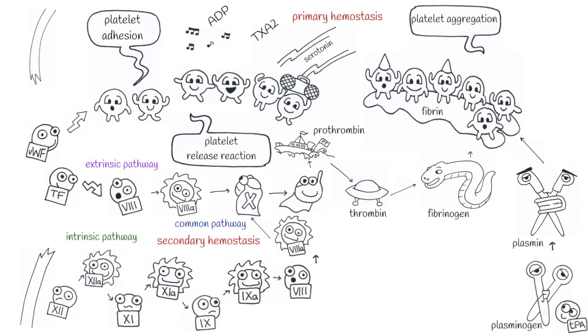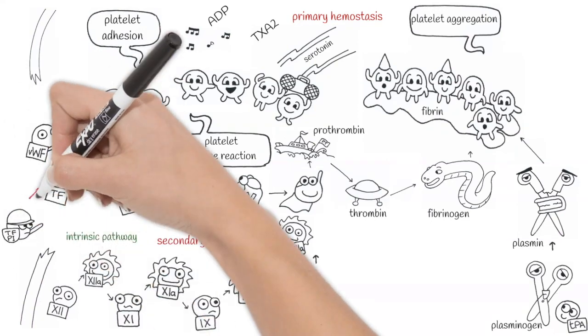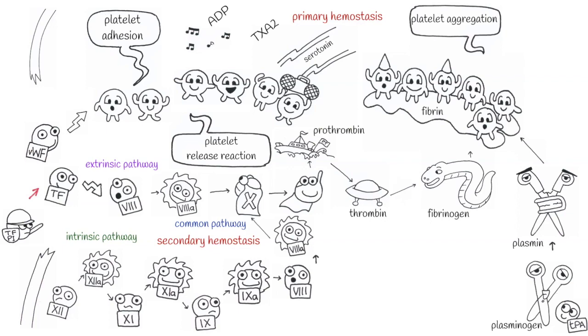In this pathway there are also some inhibitory factors that help to control the coagulation cascade. One is the tissue factor pathway inhibitor that inhibits the extrinsic pathway.